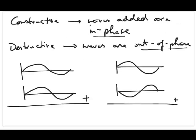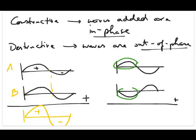Constructive interference means you add two waves that are in phase. If I have two waves A and B with their phases aligned, when I add them together I get a wave that's twice the amplitude in the positive direction as well as twice the amplitude in the negative direction. With destructive interference, you're still adding waves, but they're out of phase, so when you add them you get a decrease in amplitude — it might go completely to zero or very small — and you can still have positive and negative, just with much smaller amplitude.